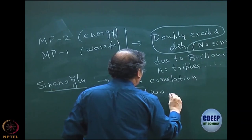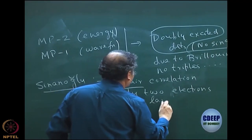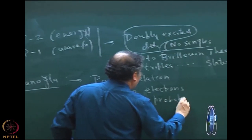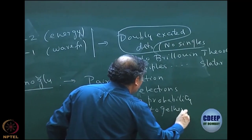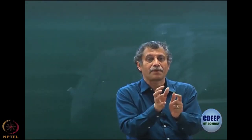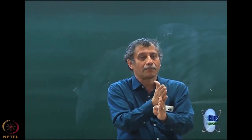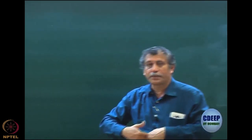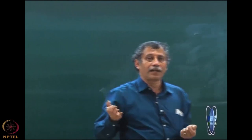Why? Because if you look at Hartree-Fock, only two electrons have a large probability of coming together. This was a hand-waving argument. The reason is that Hartree-Fock is a single determinant, so it already has the anti-symmetry built in. It has the Pauli exclusion principle built in, which means no three electrons can be in the same spatial orbital. A spatial orbital can have at most two electrons, and because two electrons are in the same spatial orbital, there is a probability that they can come together.